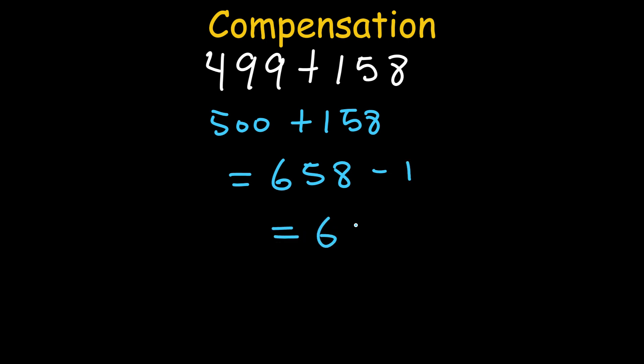This technique is called Compensation. Let's look at a first example: 499 plus 158. Don't fight the 499, make it 500. Do 500 plus 158, which equals 658. But you added 1, so subtract it: minus 1. Your final answer is 657. You can also apply this in subtraction: 1002 minus 499. Make 499 into 500. Subtract 1002 minus 500, that gives you 502, then add back the 1, giving you 503. This technique is fast, clean, and brain-friendly.